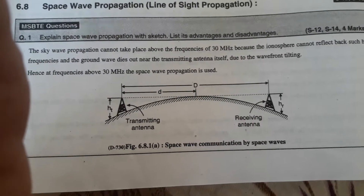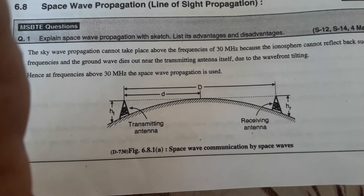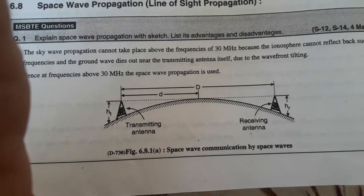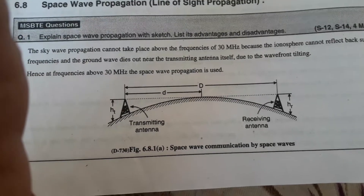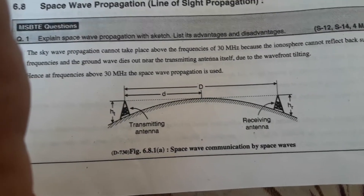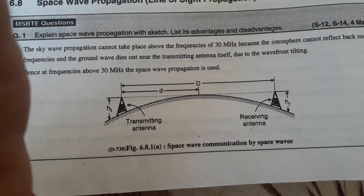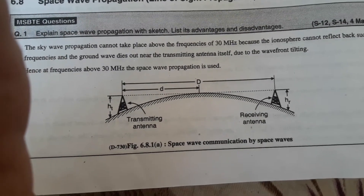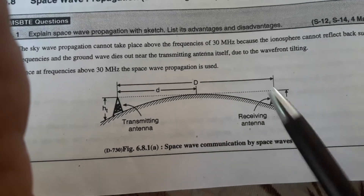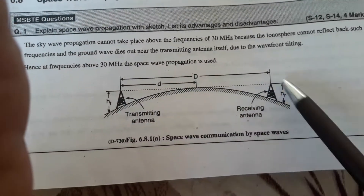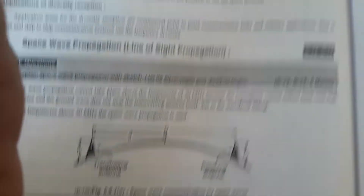Due to the straight line nature of the space waves, they will at some point be blocked due to the curvature of the earth. If the signal is to be received beyond the horizon, then the receiving antenna must be tall enough to receive the signal. This is also called as line of sight propagation, and the receiving antenna must be tall enough.